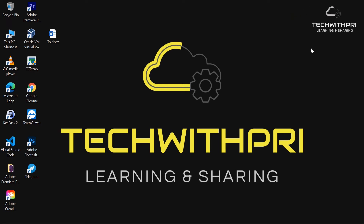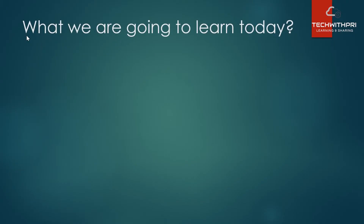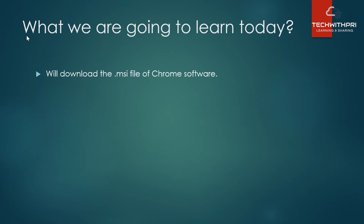In today's video we'll go further with GPO demonstration, and it's going to be very interesting because we are going to deploy software to each and every computer using GPO. Suppose I want to install Google Chrome or Adobe Reader on every machine in my domain — it's quite impossible to go to every machine individually. We'll deploy it so all machines get the software automatically installed. Today we'll deploy Google Chrome to each client machine in our domain Tech With Pre. For this, we first need to download the .msi file of Google Chrome.